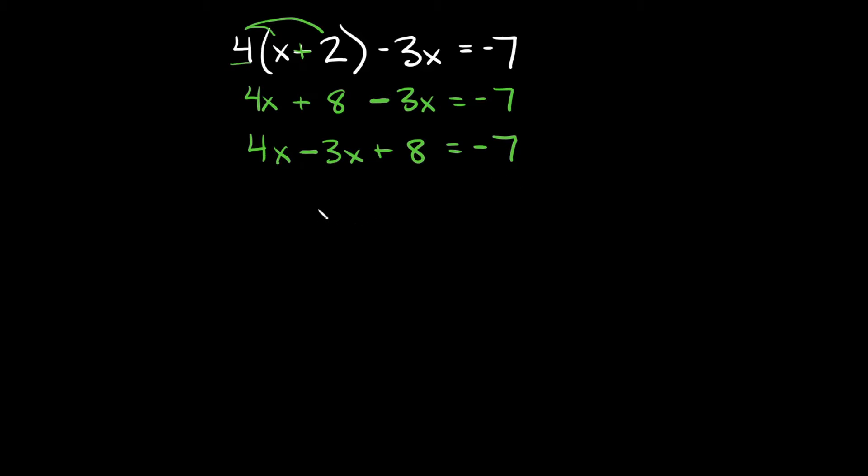So simplifying a little bit more. Four x minus three x is equal to one x. But one x we can also write just as x. And then we have this plus eight part right there is equal to negative seven.